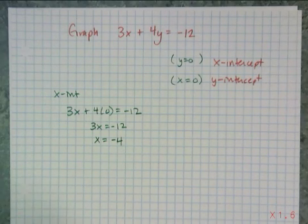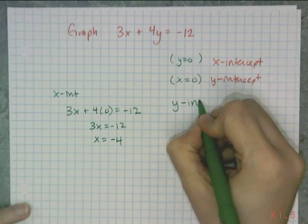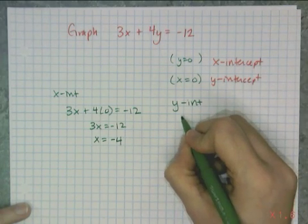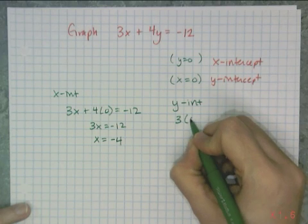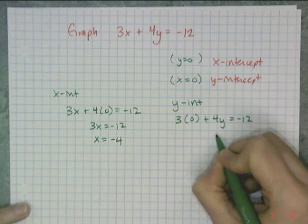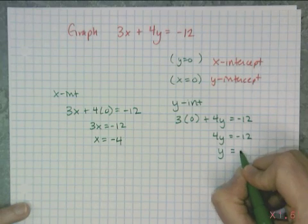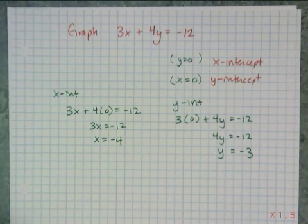I have found my first point on my line, x equals negative 4. And so now I'm going to find the y-intercept using the exact same concept. I'm going to say 3 times 0 in this case, plus 4 times y equals negative 12. So 4y equals negative 12, or y equals negative 3. So now I have my two points to graph.